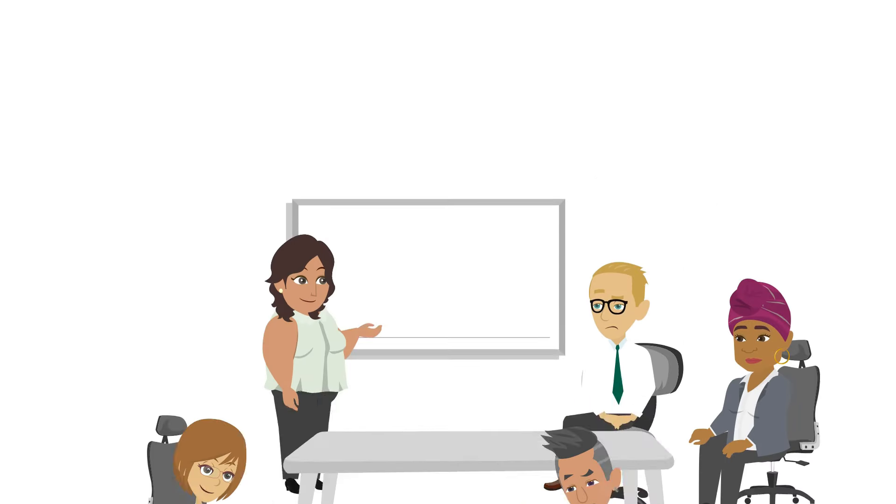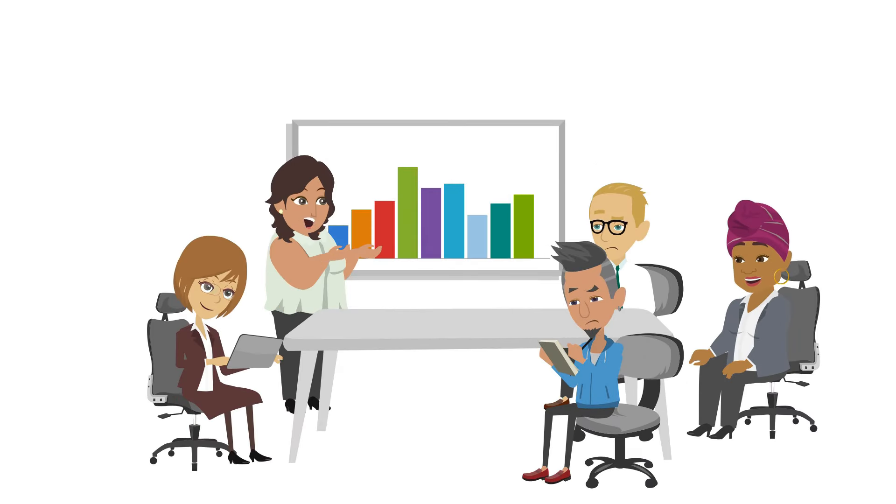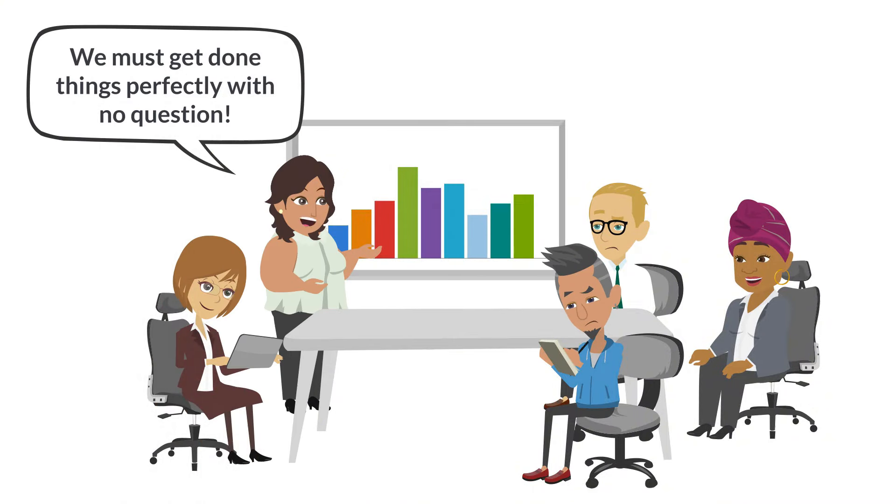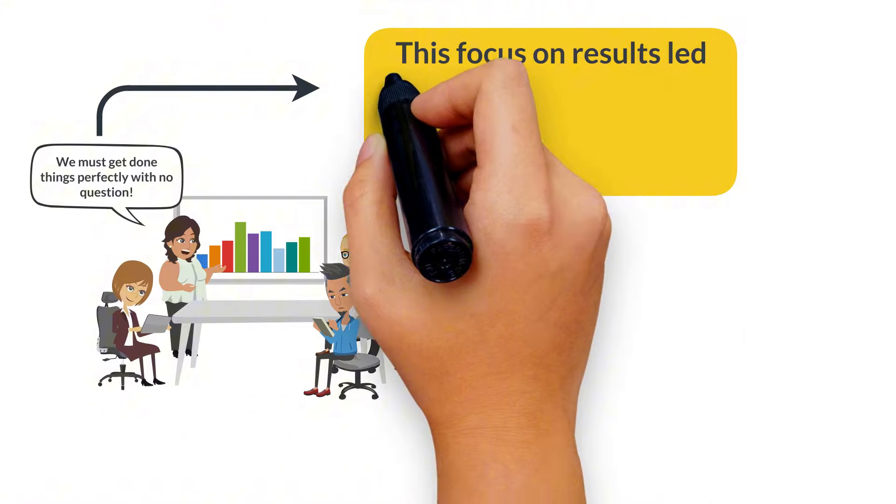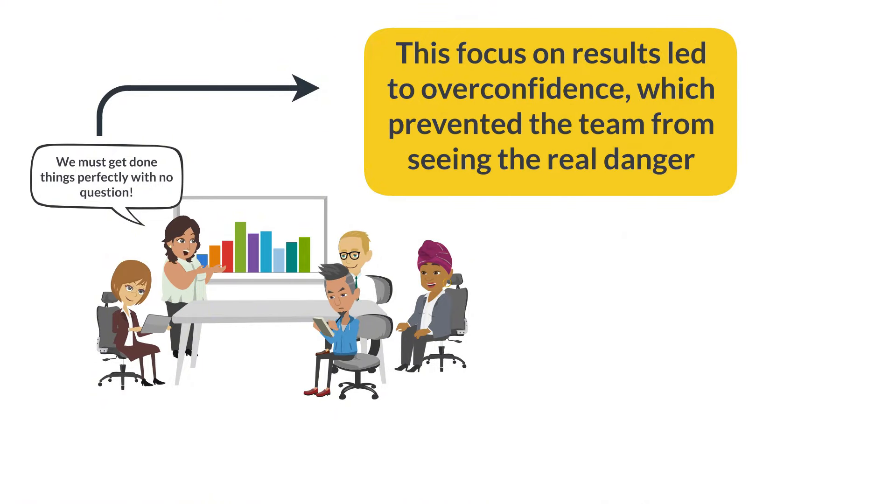Back in 2003, NASA's culture focused heavily on performance. Their main goal was getting things done perfectly every time, leaving little room for questioning or rethinking decisions. This focus on results led to overconfidence, which prevented the team from seeing the real danger.